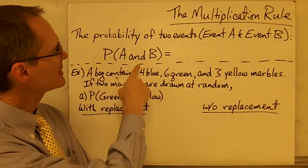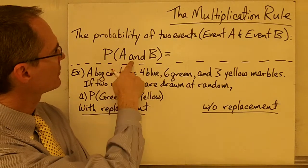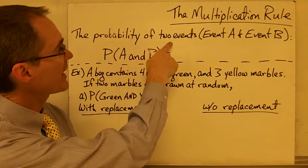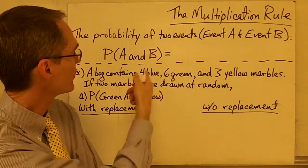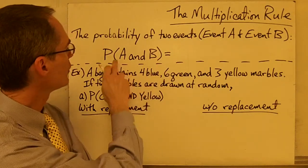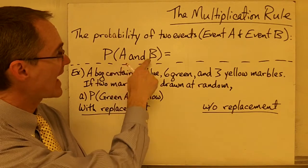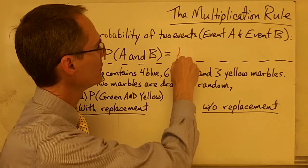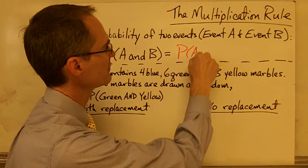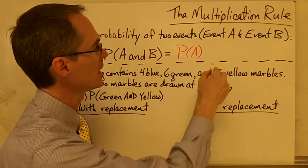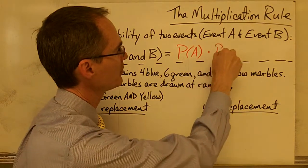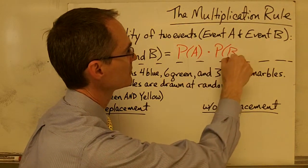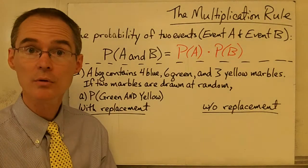We might be tempted to say the formula — the rule — if I want to calculate the probability of two events happening together, the probability of event A and event B happening, you just take the probability of the first event and multiply it times the probability of the second event. And there's our rule.